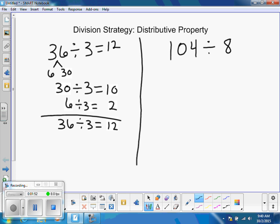So once again, we look at our dividend. We think about our divisor. We're trying to find out how many groups of 8 there are in 104. So we think, what's easy for me to divide 8 by? Well, I know that 80 can be easily divided by 8. And so that would leave 24, which is also a nice number.